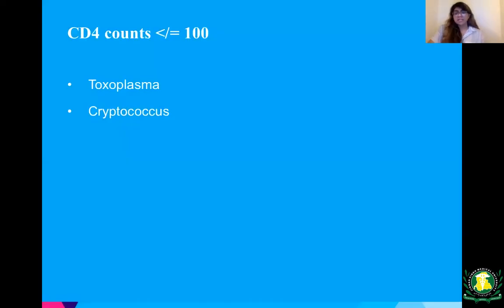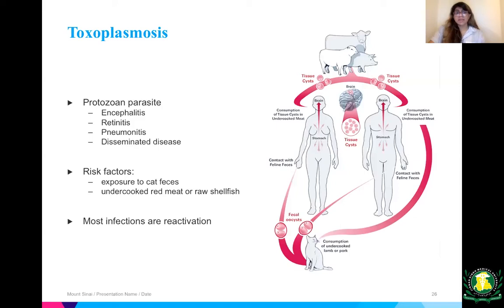At CD4 counts less than or equal to 100, think of toxoplasma and cryptococcus. Toxoplasmosis is a protozoan parasite that can present as encephalitis, retinitis affecting the eyes, pneumonitis affecting the lungs, and disseminated disease. Risk factors include exposure to cat feces, undercooked red meat or raw shellfish — and most infections are reactivation. The life cycle shows fecal oocysts from cats, human contact leading to dissemination, and ingestion of tissue cysts in undercooked meat.